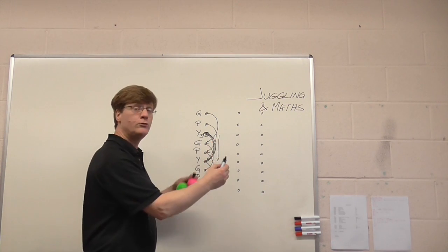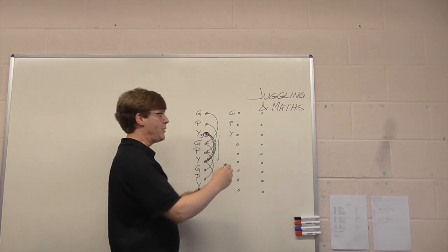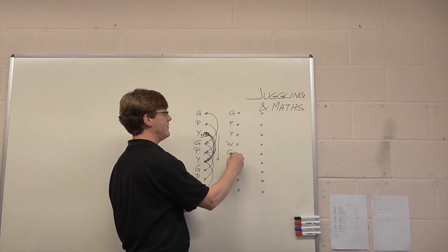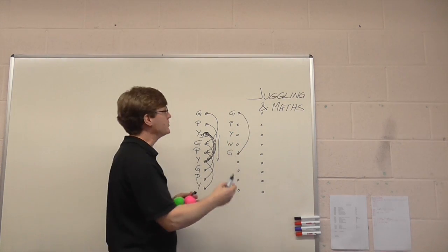The same thing works if I juggle four. So I've now got green, pink, yellow, and perhaps white. And then the green again. And you can see now the green travels down four places.